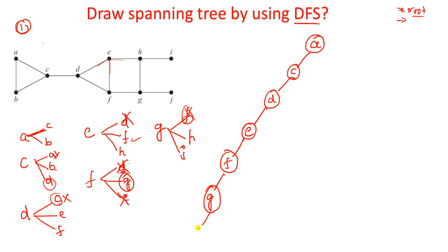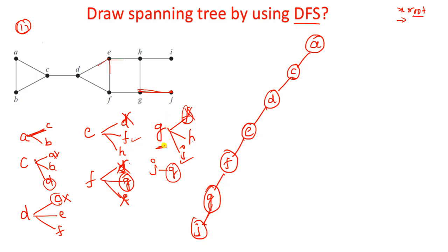Our new vertex is J. Explore J - J has only one incident vertex, G, which is already visited. So we are stuck here. We backtrack to G. From G, F is already visited, J is also visited. The remaining element is H. H is our new vertex. Explore H - H has E and I. I is not visited, so only I is the remaining element.